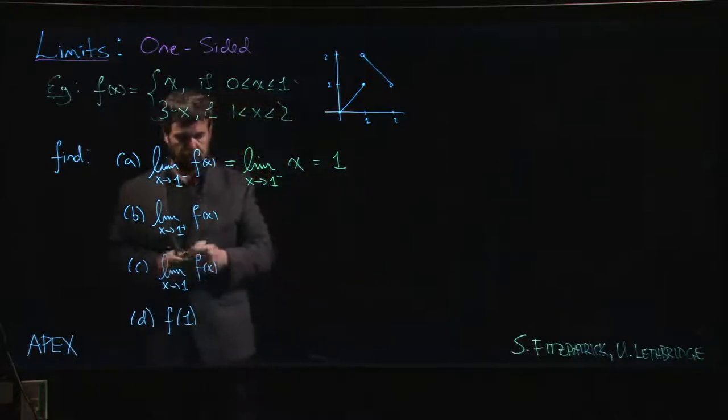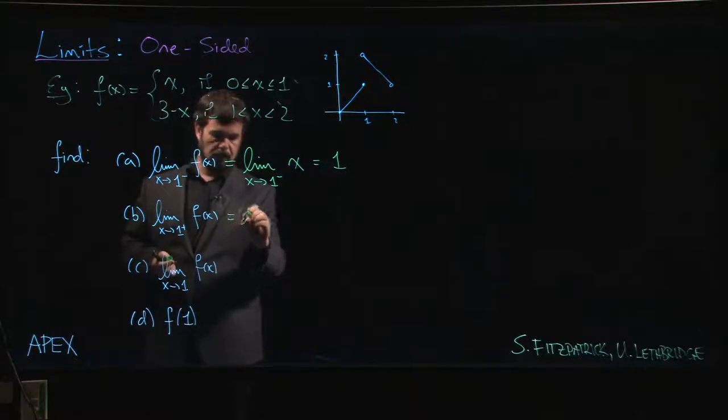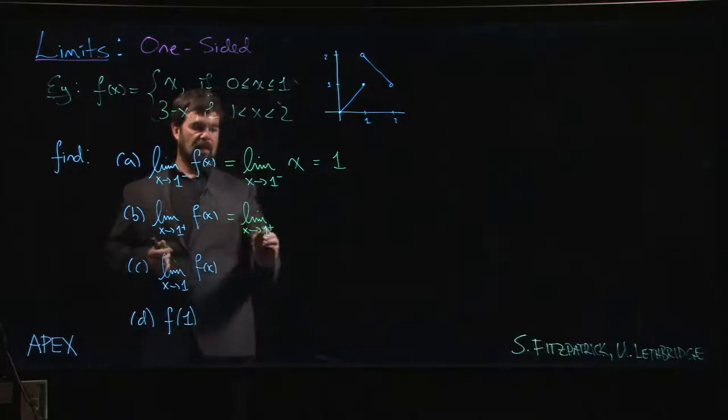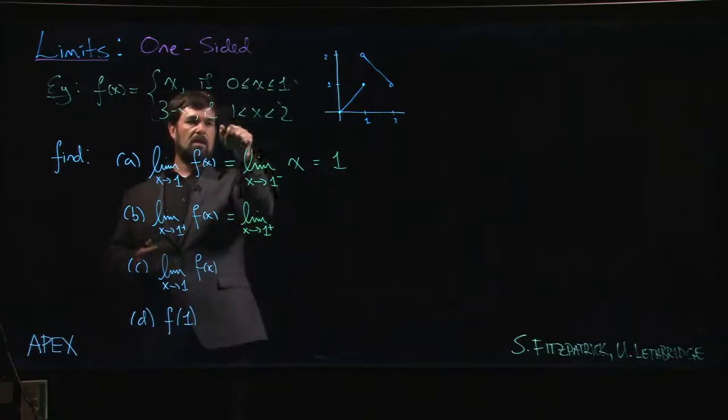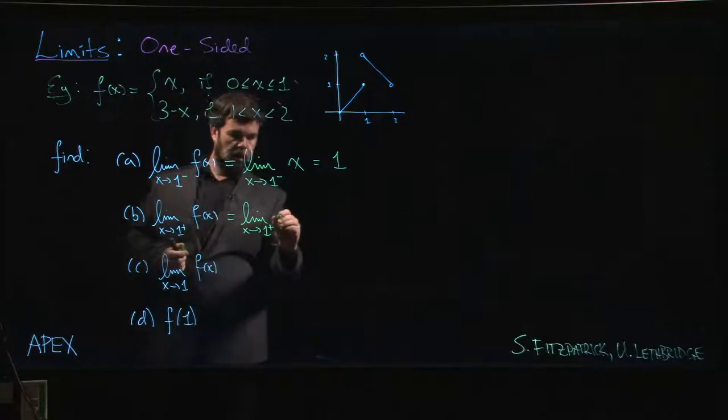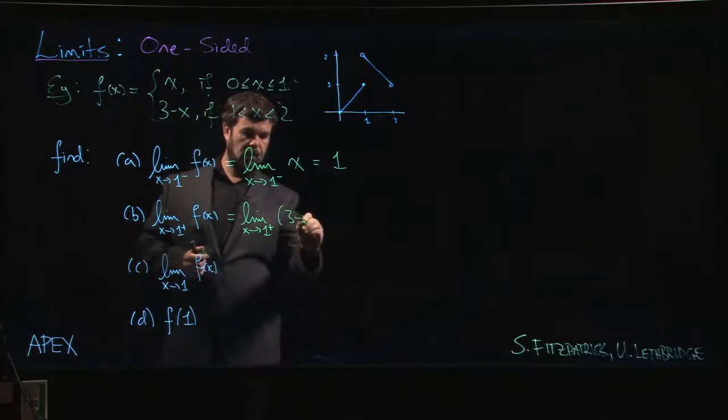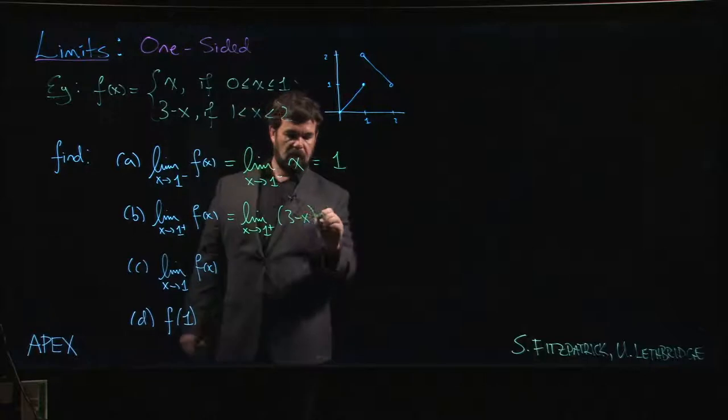Same story here. X is approaching one from the right, that means x is bigger than one. Here's where x is bigger than one, we need to use the expression three minus x, and so we get three minus one, we get two.